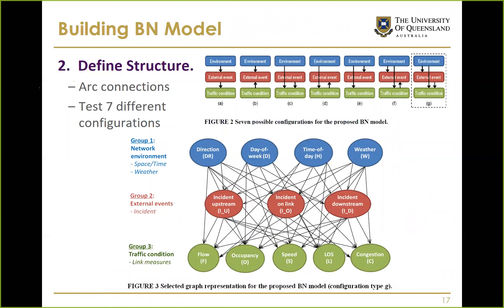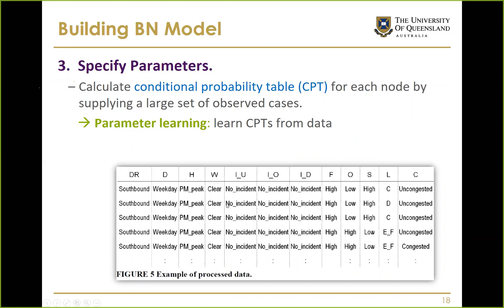The second step was defining the network structure — how to connect edges. Given the three-tier variable grouping, we enumerated all combinations of possible group configurations, since we know environment variables affect others but are not affected themselves. We tested each structure using the likelihood ratio test and Bayesian network scoring tests to find the best model from seven configurations.